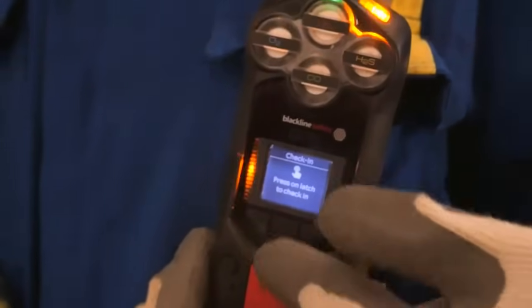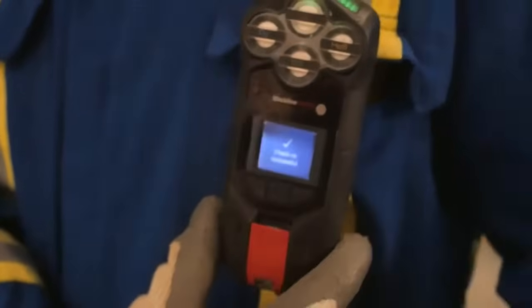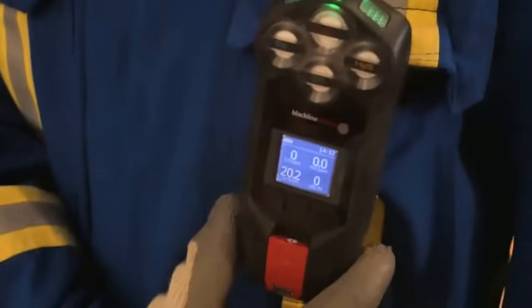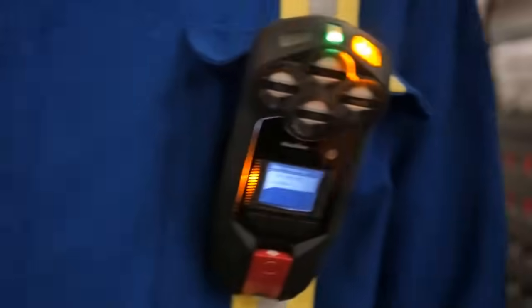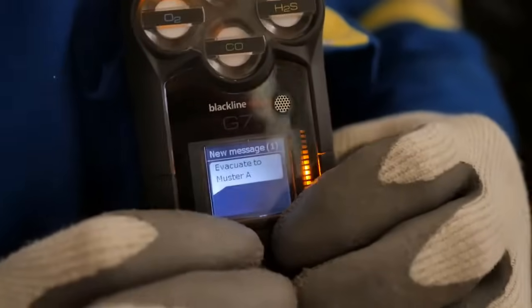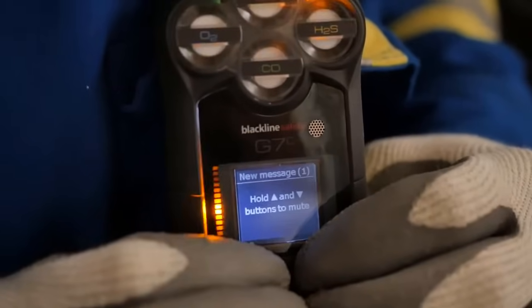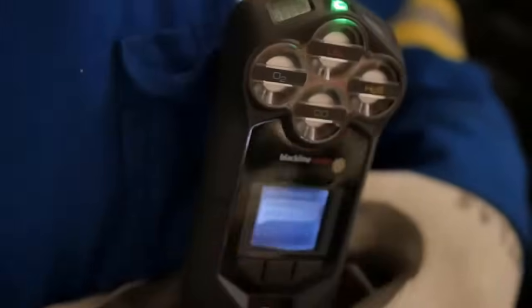The display will ask you to press the red SOS latch inward to confirm you're okay. Sometimes a G7 yellow alarm requires you to look at the screen for a message, gas reading, or if your battery is low. In these cases, press and hold the up and down arrow keys at the same time until G7 stops flashing, beeping, and vibrating.